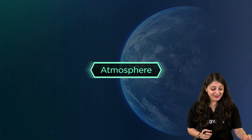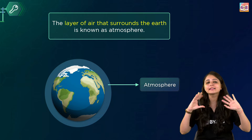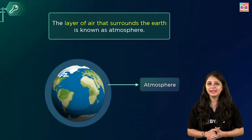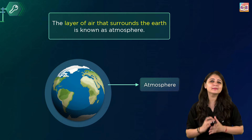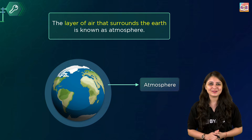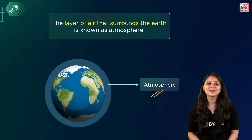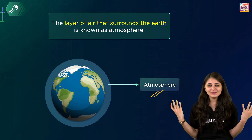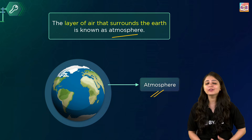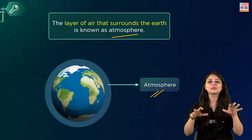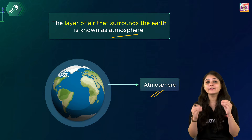The second term is atmosphere. Imagine the earth as a big round ball, like a giant football. Now picture a huge invisible blanket of air wrapped around it — that's the atmosphere. The big blanket of air that surrounds the earth is called the atmosphere. This layer of air extends up to many kilometers above the surface of the earth. The atmosphere also has different layers.